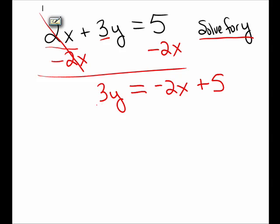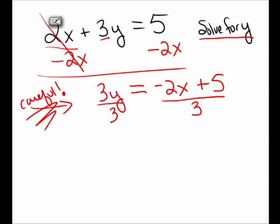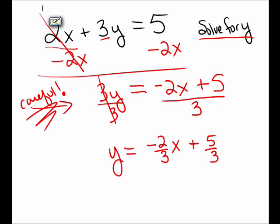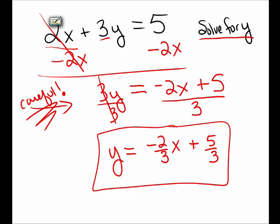Now to isolate y, I need to divide the entire left side by 3 and the entire right side by 3. Be careful here — it's very common for students to divide only one piece of a side by 3. For example, I often see students only divide the negative 2 by 3 or only divide the 5 by 3. But everything on the right side of the equation needs to be divided by 3. On the left side, the 3 cancels, leaving y. On the right side, I have the entire quantity negative 2x plus 5, all divided by 3, giving negative 2 thirds x plus 5 thirds. So y is equal to negative 2 thirds x plus 5 thirds.